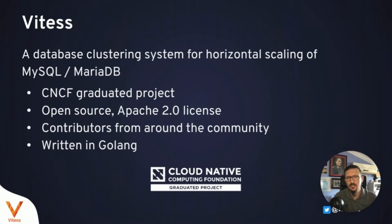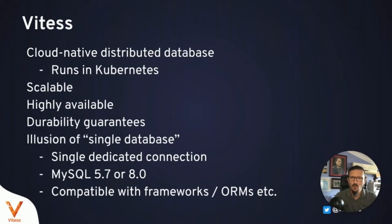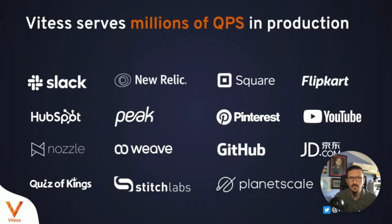Vitesse is a database clustering system for the horizontal scaling of MySQL. It is a CNCF graduate project, open source licensed, with contributors around the world. Vitesse provides a single illusion of a database with dedicated connections that can work on MySQL 5.7 or 8.0, and is compatible with common frameworks and ORMs. It is scalable, provides high availability and durability guarantees, and serves millions of QPS around the world.